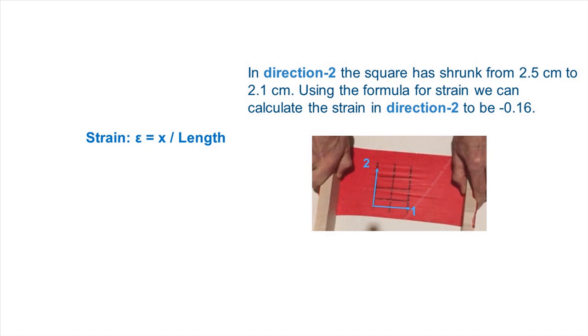In direction 2, the square has shrunk from 2.5 cm to 2.1 cm. Using the formula for strain, we can calculate the strain in direction 2 to be minus 0.16.